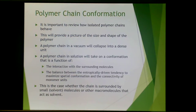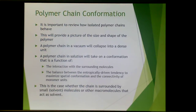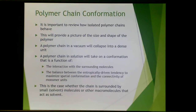Polymer chain conformation is something we really have to consider. It is important to review how isolated polymer chains behave, as this provides a picture of the size and shape of a polymer. A polymer chain in a vacuum will collapse into a dense unit. A polymer chain in solution, however, will take on a conformation that is a function of the interaction with surrounding molecules. The balance between the entropically driven tendency to maximize spatial conformation and the connectivity of the polymer units has a big effect on that conformation.